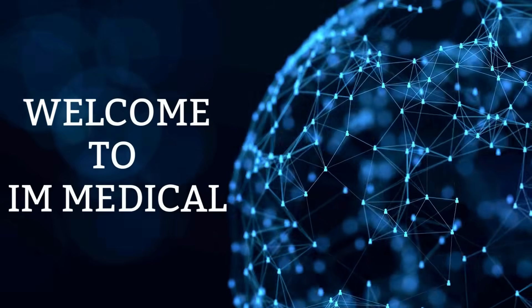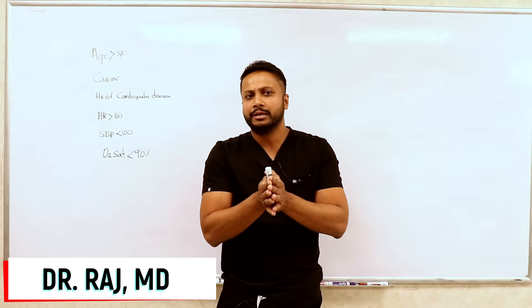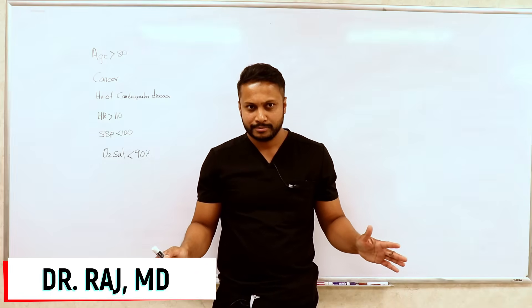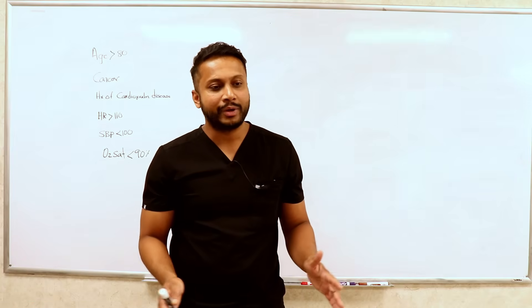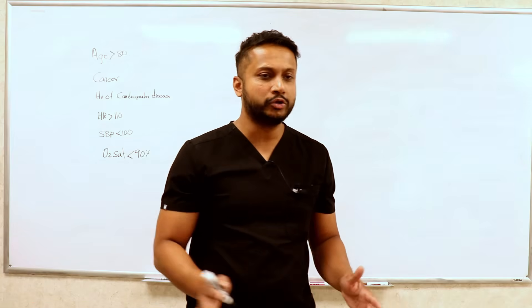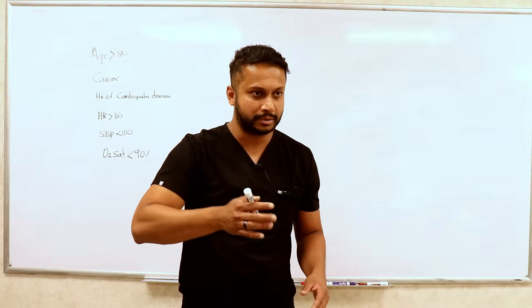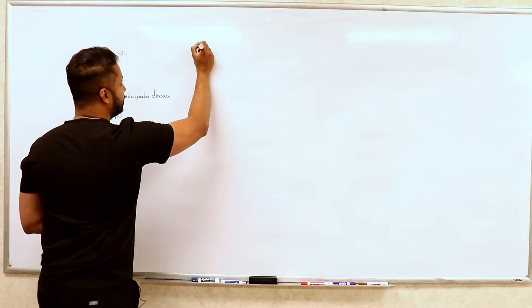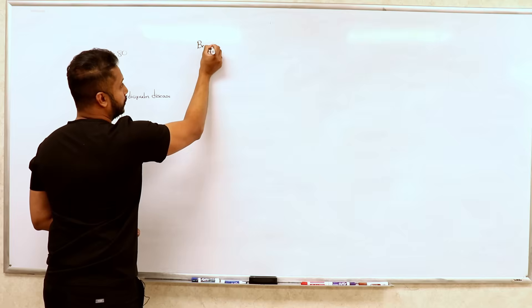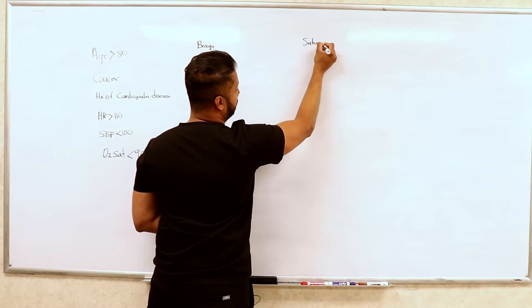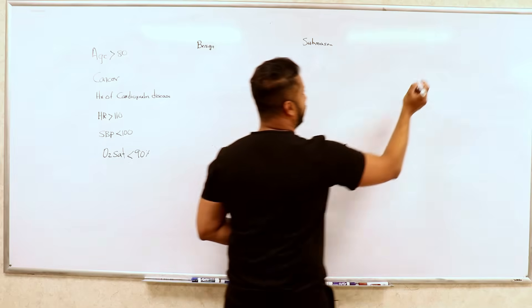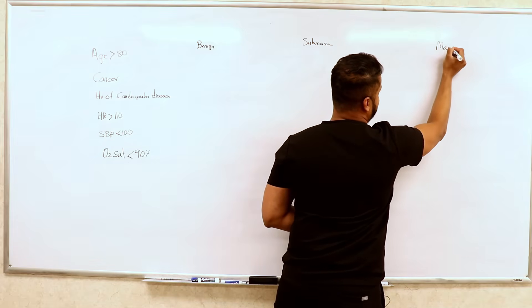Let's build that medical brain. Now that you've understood everything about pulmonary embolism, things have changed. Normally, whenever you have a patient with pulmonary embolism, we used to classify it into three different types: benign, sub-massive, or massive.